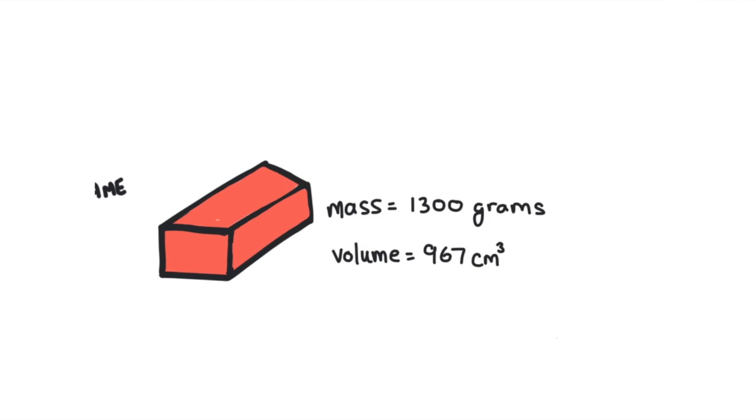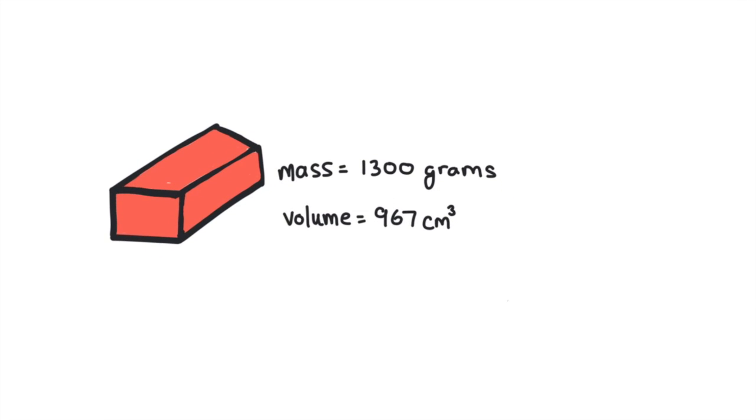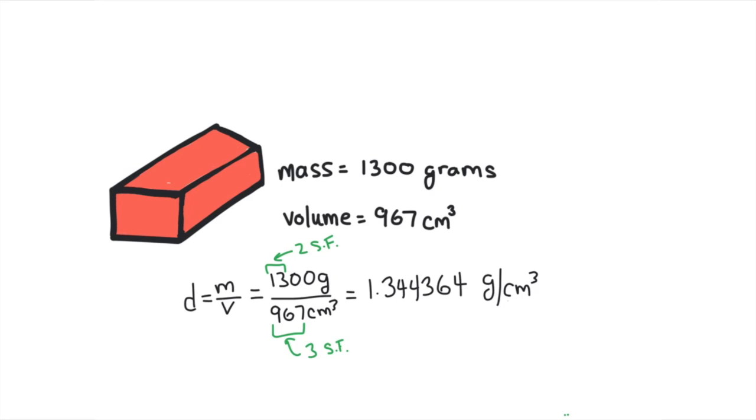This brick has a mass of 1,300 grams, and it has a volume of 967 centimeters cubed. What is its density? Density is equal to mass divided by volume. So 1,300 grams divided by 967 centimeters cubed equals 1.344364 grams per centimeter cubed. Well, that's what our calculator reports anyways. I need to round that answer so it is as precise as my least precise measurement. 967 has three significant figures, and 1,300 has two significant figures, because trailing zeros are not significant unless there is a decimal place somewhere in the number. Only the 1 and 3 are significant. I need to round my answer to two significant figures. So I'll round it to 1.3 grams per centimeter cubed.